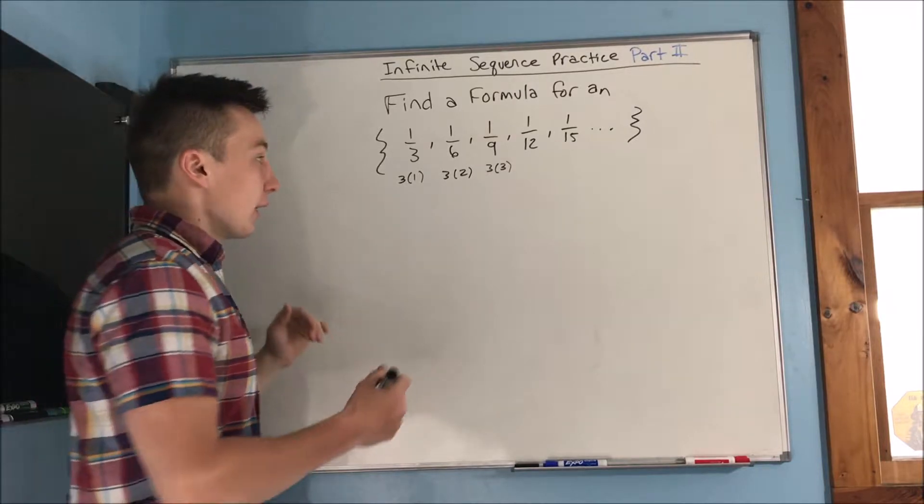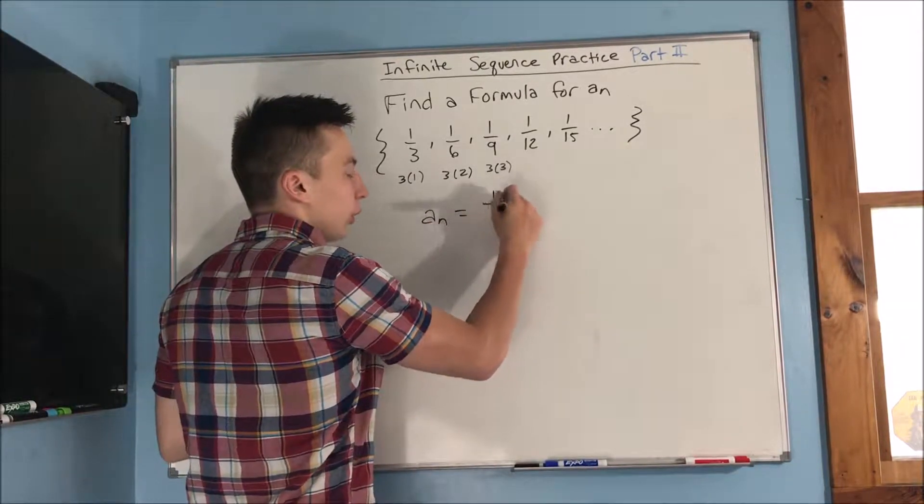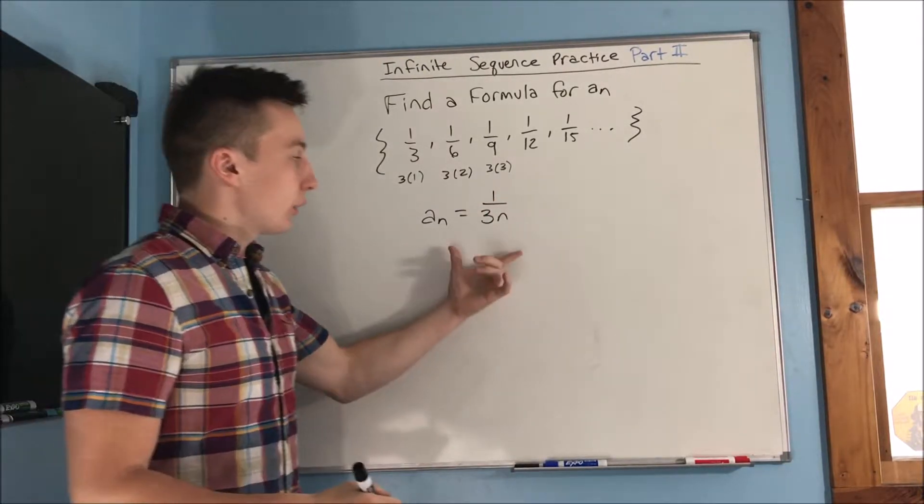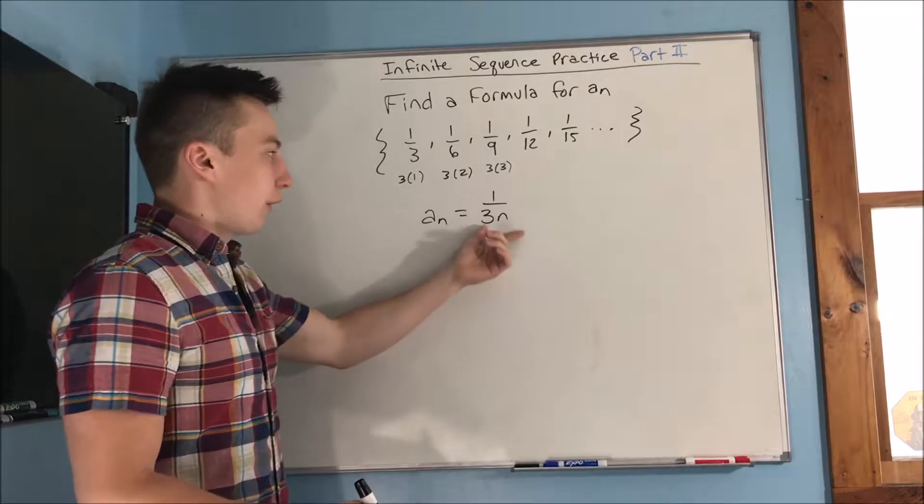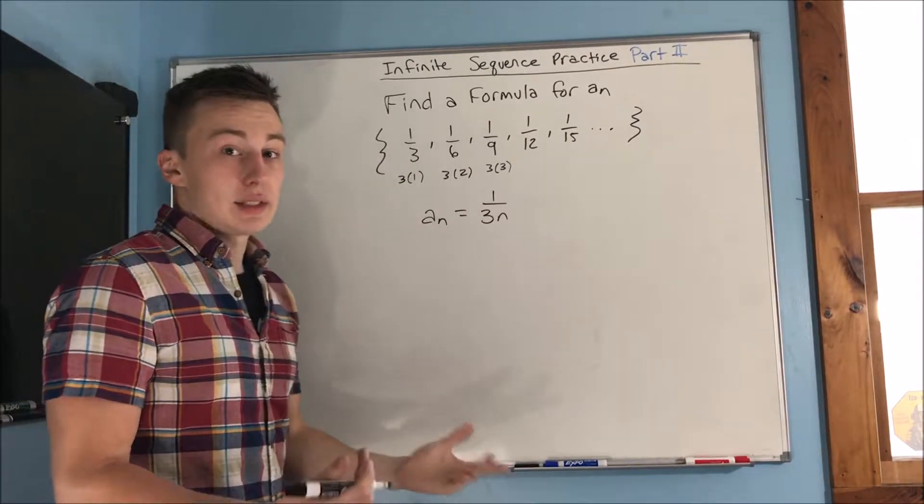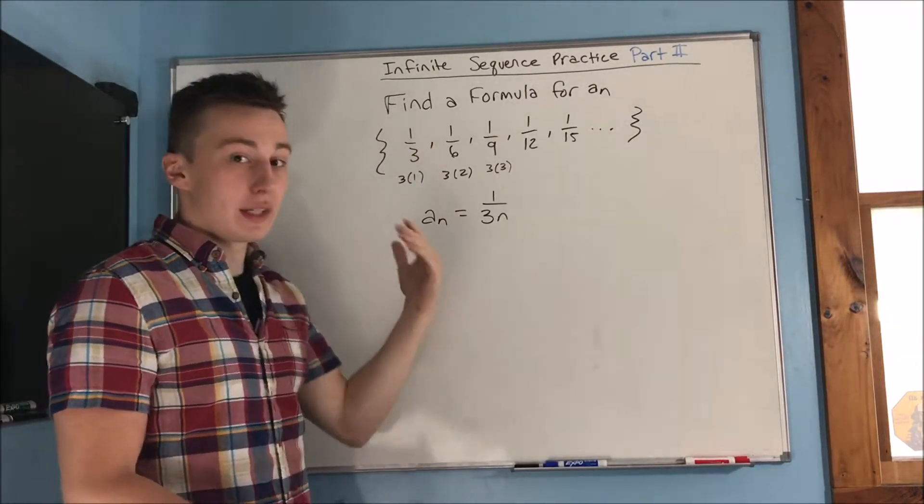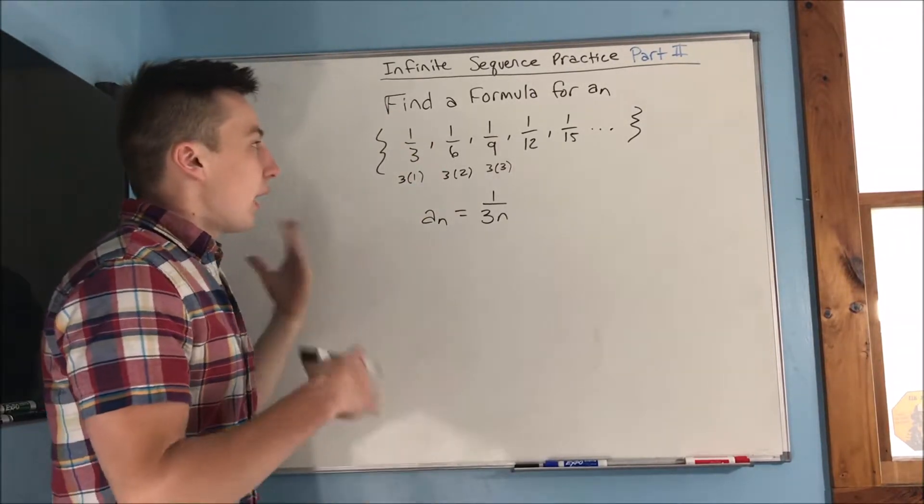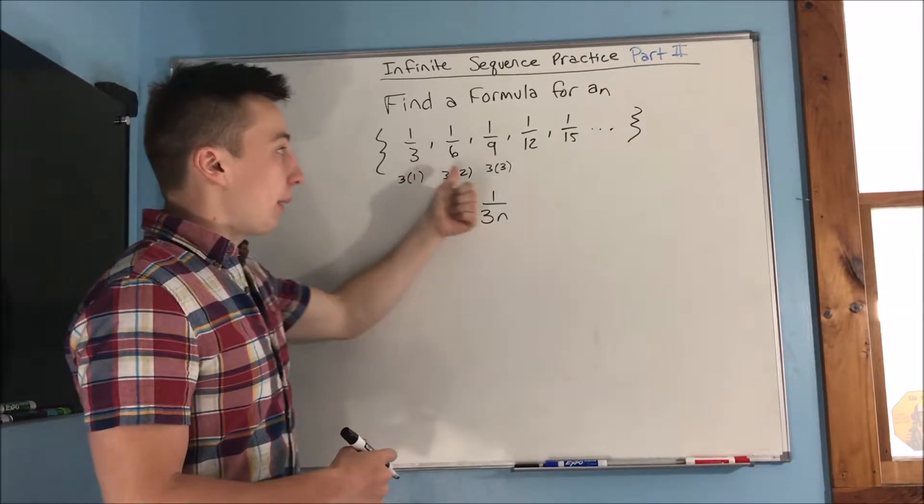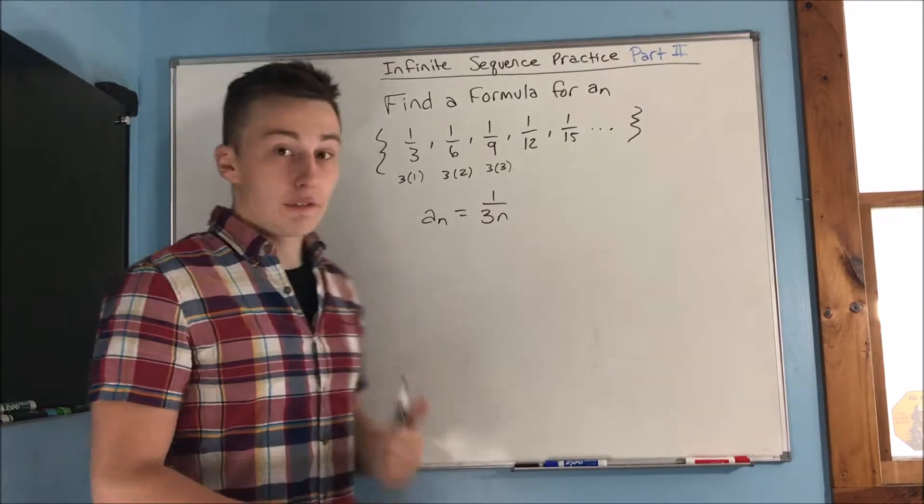So we can actually just write this sequence as a sub n equals one over three n. And that's what this is, so that works, right? For our first term, we have one over three times one and that's one-third. For our second term we have one over three times two and that's one-sixth. So it works out and that's because we found we seen that the denominator is going up by multiples of three. So that's our first problem.